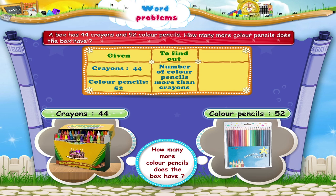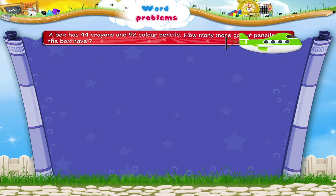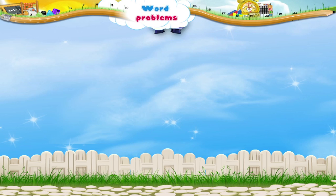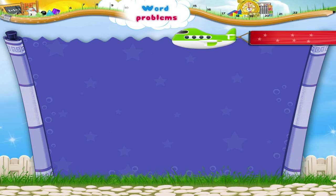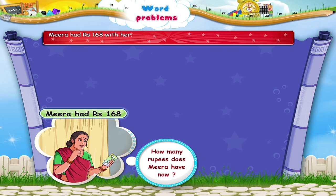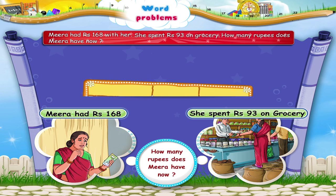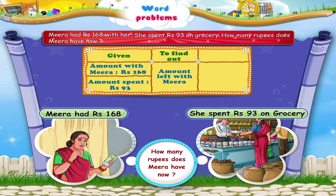More than crayons, operation: subtraction. Try the next one. Mira had rupees 168 with her. She spent rupees 93 on grocery. How many rupees does Mira have now? Given: amount with Mira — rupees 168, amount spent — rupees 93. To find out: amount left with Mira. Operation: Subtraction.